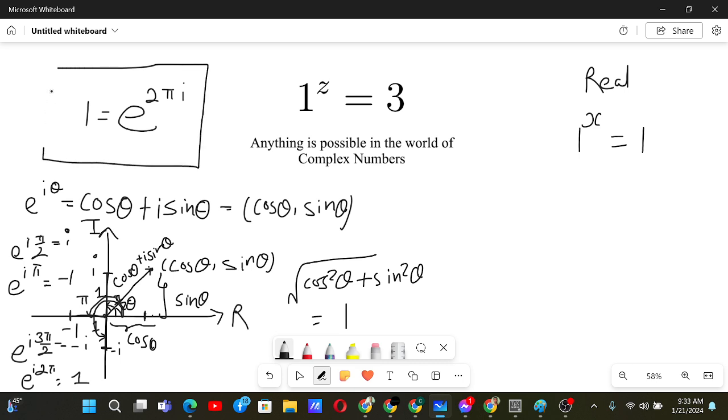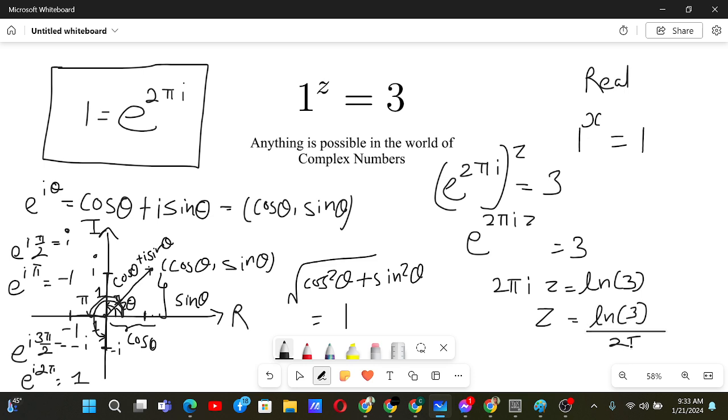Now if we have this statement, it will not be that hard to solve the problem. e to the power 2πi equals 1, so 1 to the power z equals 3. Now you can multiply the indices. e to the power 2πi·z equals 3. Then 2πi·z equals ln(3) by taking log on both sides. So z will be ln(3)/(2πi). This is the answer.